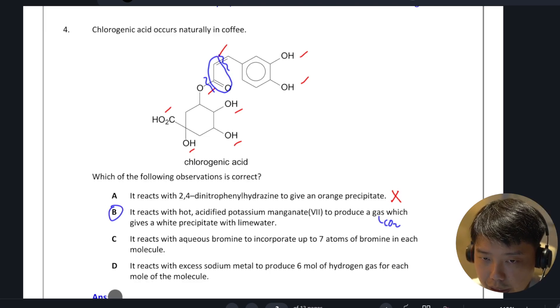Just to make sure, we confirm with options C and D first. It reacts with aqueous bromine to incorporate up to seven atoms of bromine. This is rather impossible because even if you take into account the alkene which will take up one Br, on the phenol you can only put in three atoms of Br. So total is four atoms at the max.